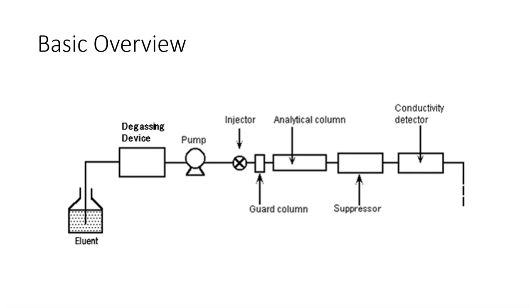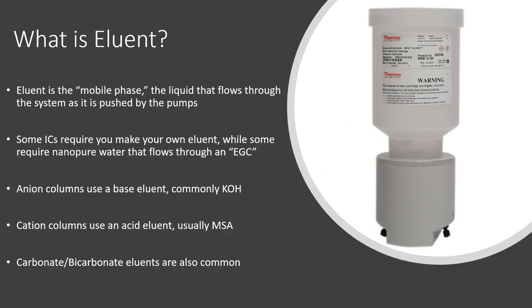First let's talk about the eluent. What is eluent? Eluent is the mobile phase—this is the liquid that flows through the system as it's being pushed by the pumps. Some ICs require that you make your own eluent, while some require nano pure water that flows through an EGC. EGC means eluent generator cartridge, which uses an electrolytic chamber to turn very concentrated eluent into a more diluted eluent based on a current that you apply to it. That's what this picture is on the right—this is an EGC.